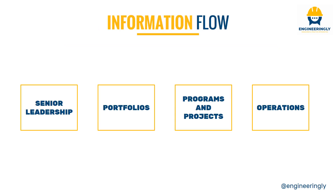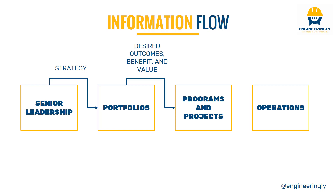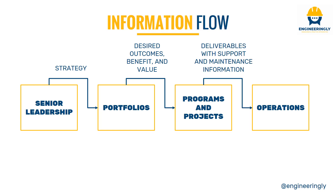Another important thing to know for your PMP exam is the information flow in the system of value delivery. From left to right, we have the senior leadership of an organization — the C-level people, directors, and board of directors. These people give the portfolios the strategy; portfolios translate the strategies as desired outcomes — what do we want from projects? They break down the strategy into projects and programs and give it to the program and project managers, so they can create those desired outcomes. The programs and projects create the deliverables and give them to operations.